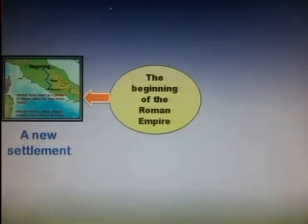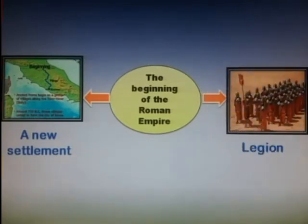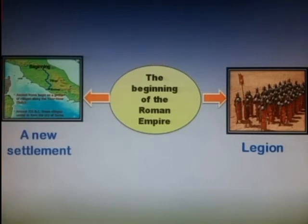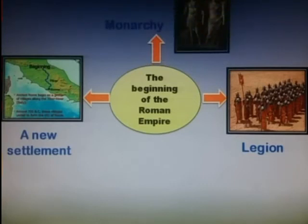This is the first topic of Chapter 1: The Beginning of the Roman Empire. Ancient Rome began as a group of villages along the Tiber river in Italy. The fertile banks of the river were ideal for farming, which became the major profession of the Romans. The Romans organized a very superior army called a Legion. The legions not only made great conquests but also helped the government keep peace in the empire. The Roman system of government was based on monarchy.